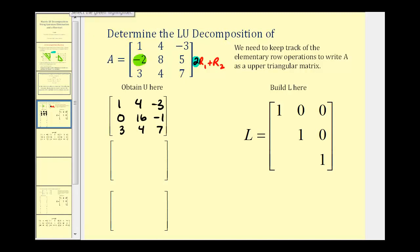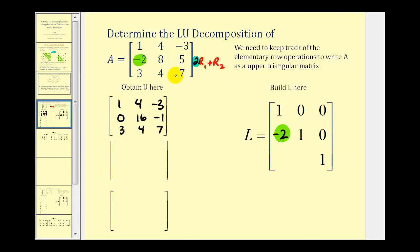If we look at our lower triangular matrix at row two, column one, this element is going to be the opposite of our multiplier. The opposite of positive two is negative two. This is how we're going to build our lower triangular matrix — we'll always use the opposite of the multiplier used to obtain the zero in the specific position.